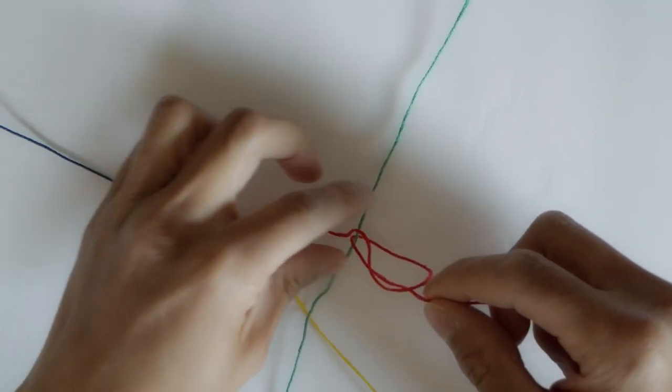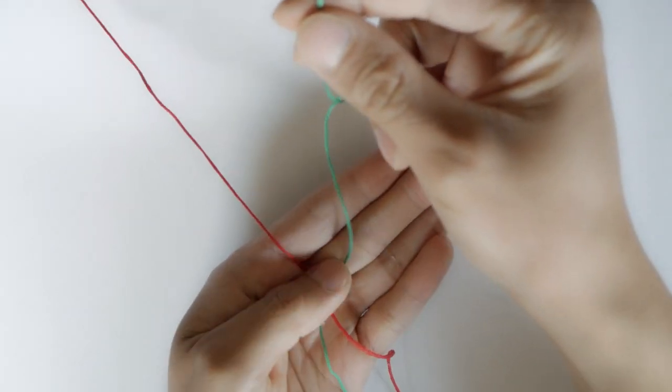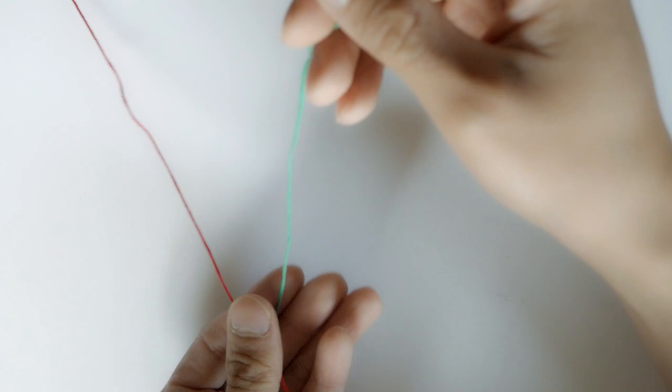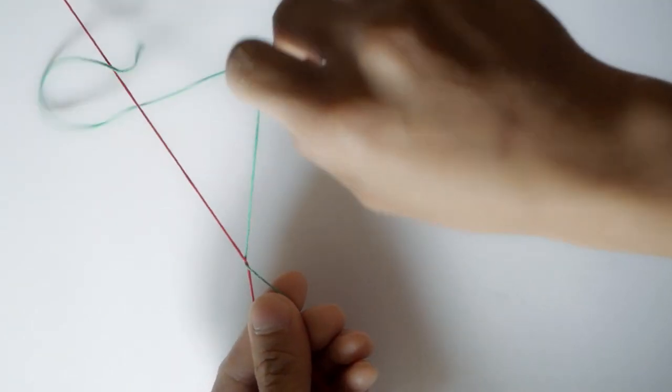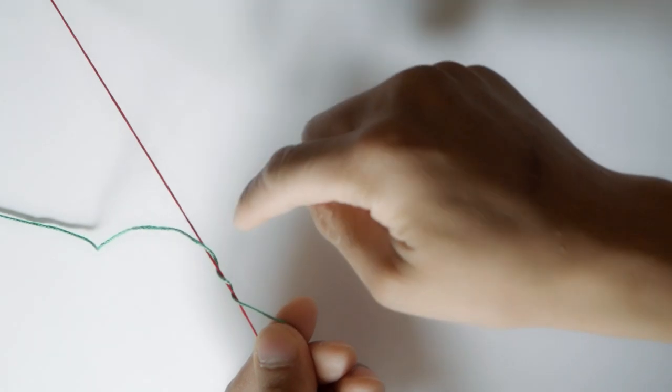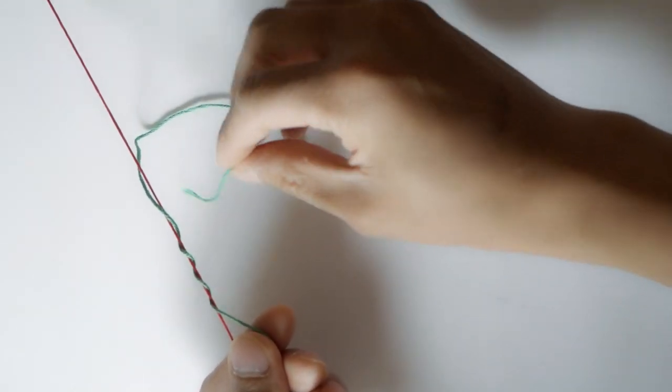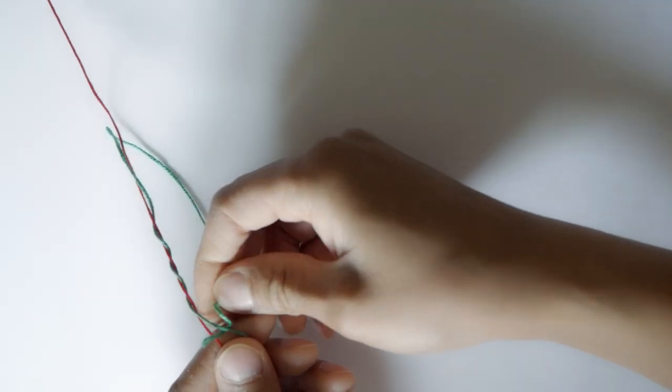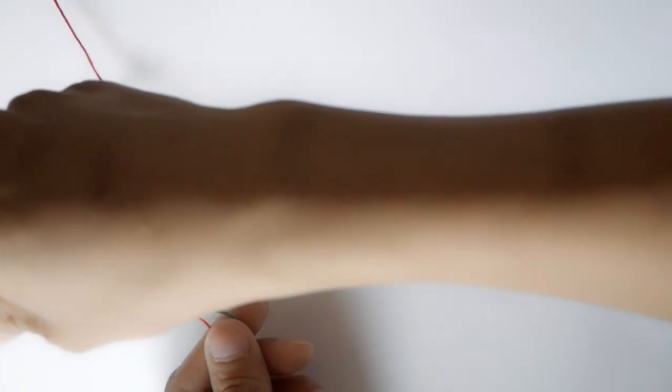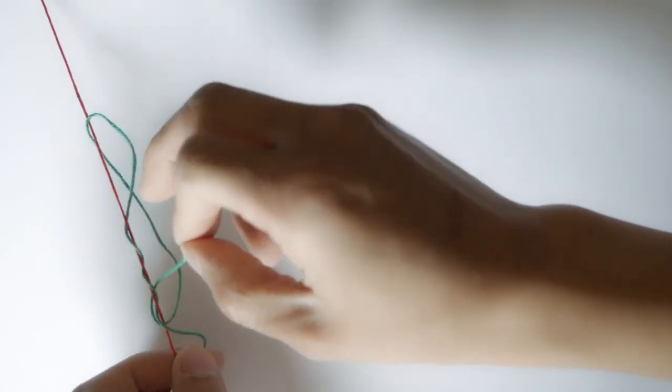So in here we're going to tighten up that knot. So now with our second leader tag end, we want to pinch where we made the knot and we're going to just do an improved clinch knot. So you want to go over that main leader line that's going to that three-way swivel about seven to eight times. And here I'll just do a few times, and then the tag end of that second leader is going to come back and go into that loop that you pinched. And then you now create another loop, and this tag is going to go under that loop and back out towards you.